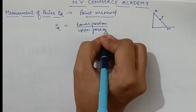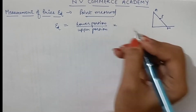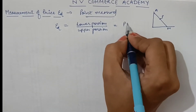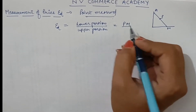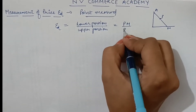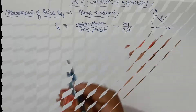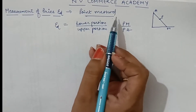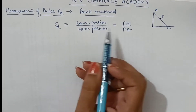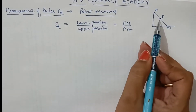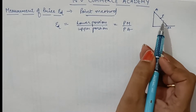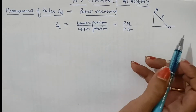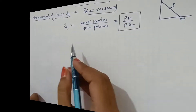Here, elasticity would be PM divided by PA. So, point elasticity refers to price elasticity of demand at any point on a given demand curve.